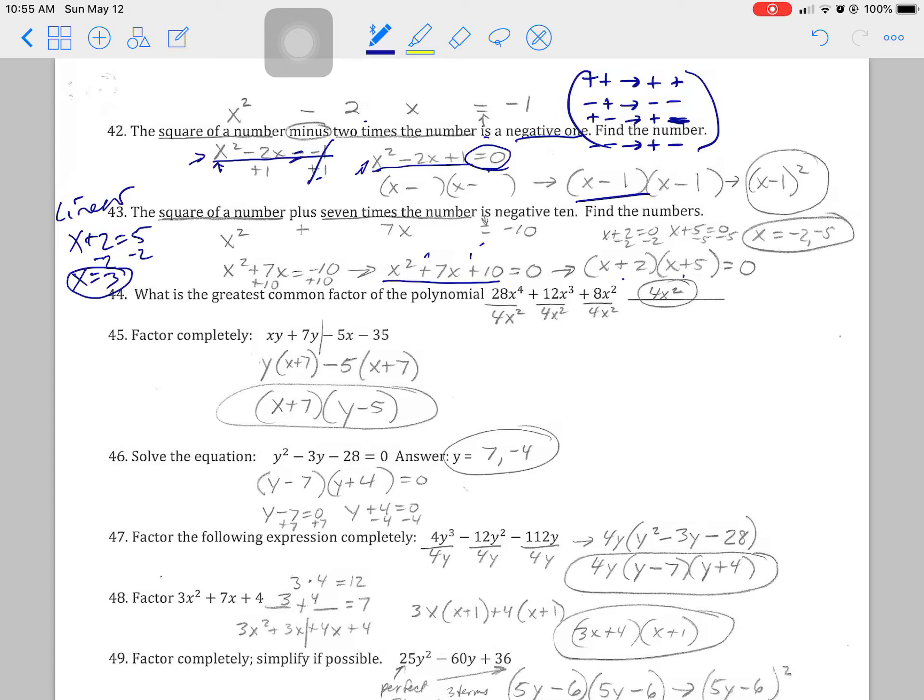And then factors of 10, factors of 10, two numbers that multiply to get a 10 that will add to get a 7. That's 2 and 5. Then when it says find the numbers, you must solve.